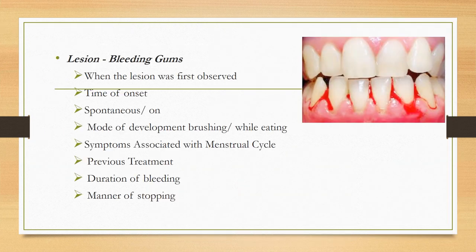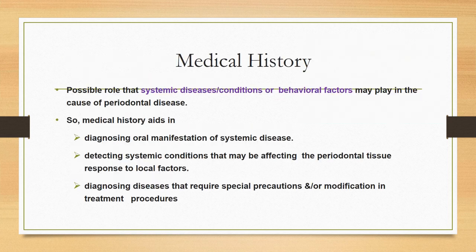For bleeding gums, note when the lesion was first observed, time of onset, spontaneity of bleeding, mode of development such as during brushing or eating, symptoms associated with the menstrual cycle, previous treatments, duration of bleeding, and manner of stopping — such as whether the patient uses mouth rinsing or mouthwashes.